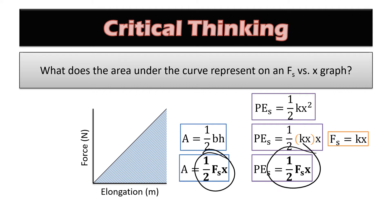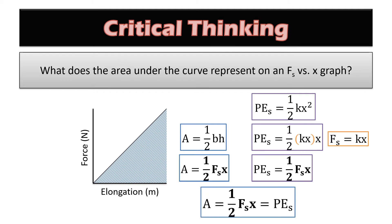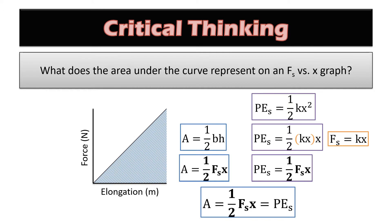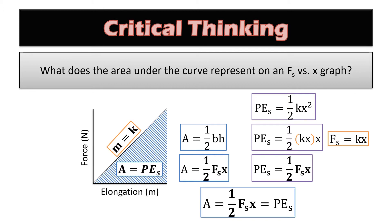So they're the same thing — the area under the force-elongation curve equals the potential energy in the spring. This area is the potential energy stored in that spring. What's the slope of that line? It's F-sub-s divided by x — force divided by elongation — which equals k from Hooke's law. This is a powerful graph: the slope equals the spring constant, and the area under the curve equals the potential energy in the spring.